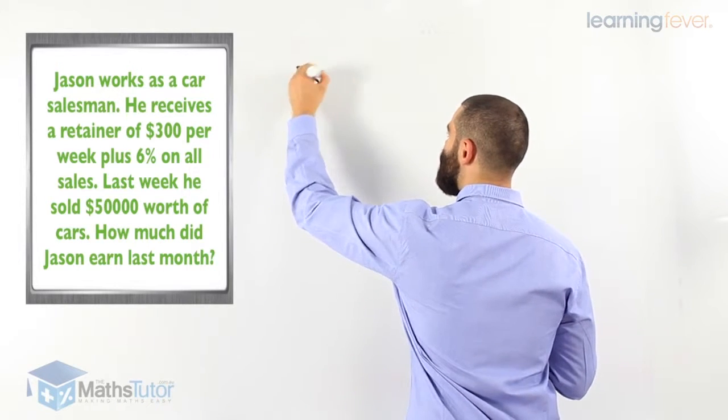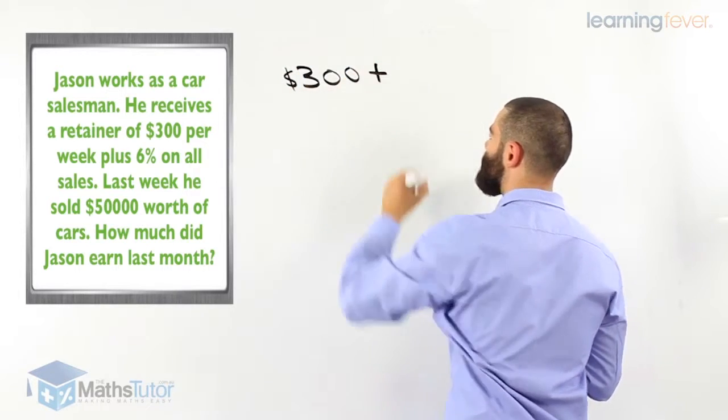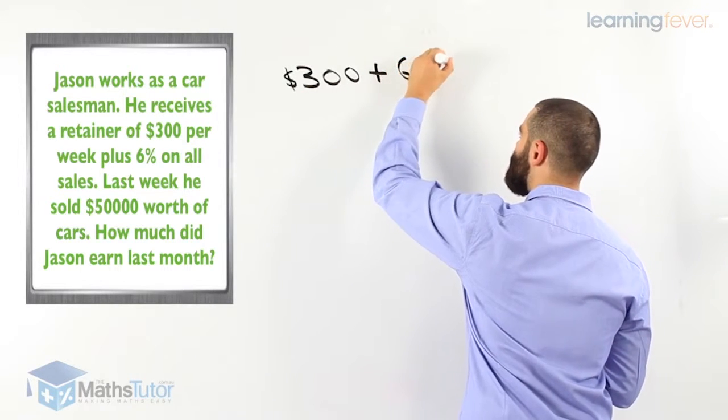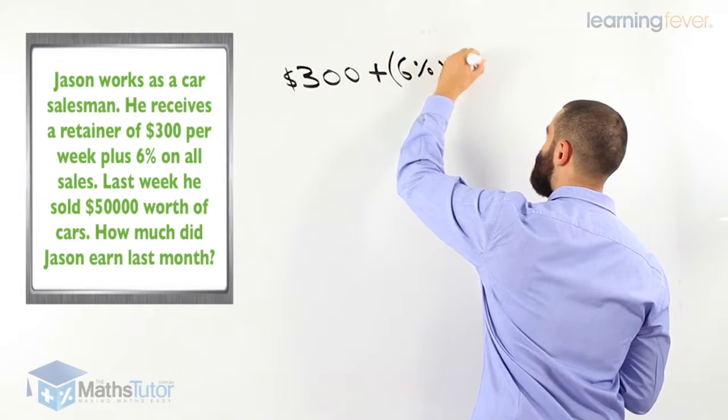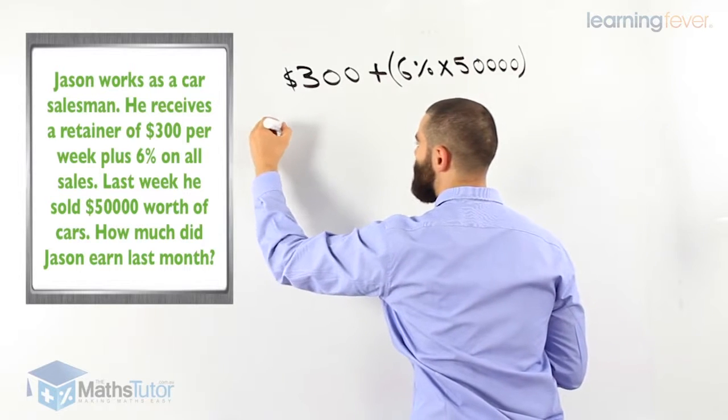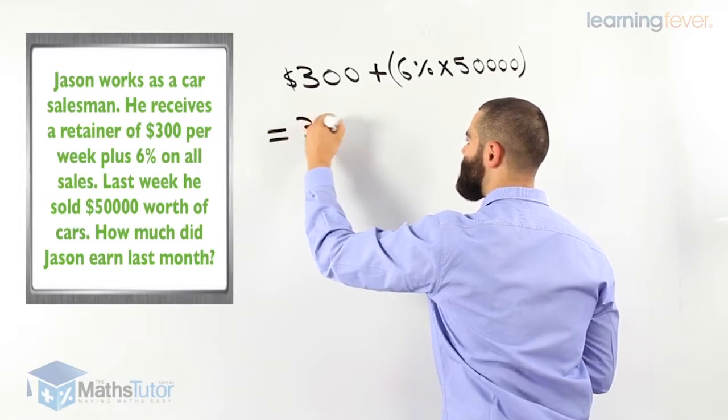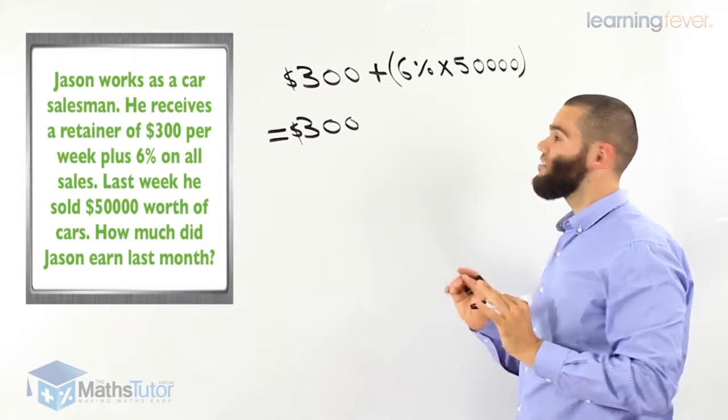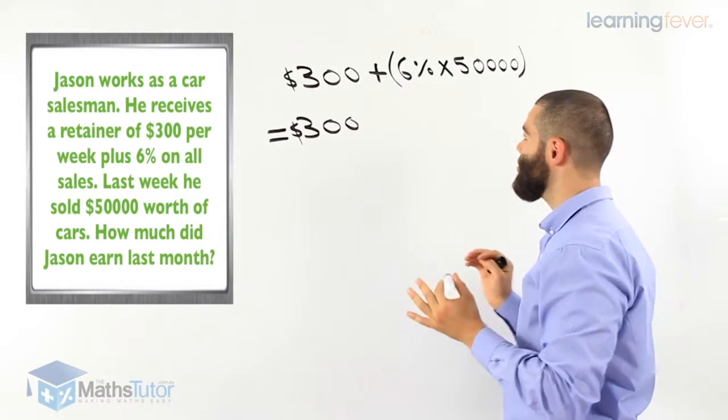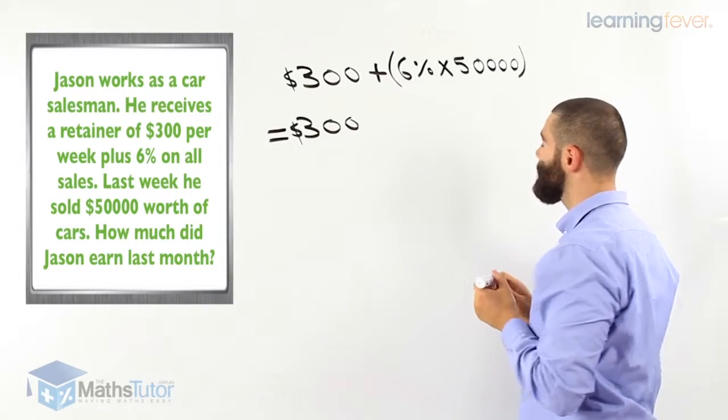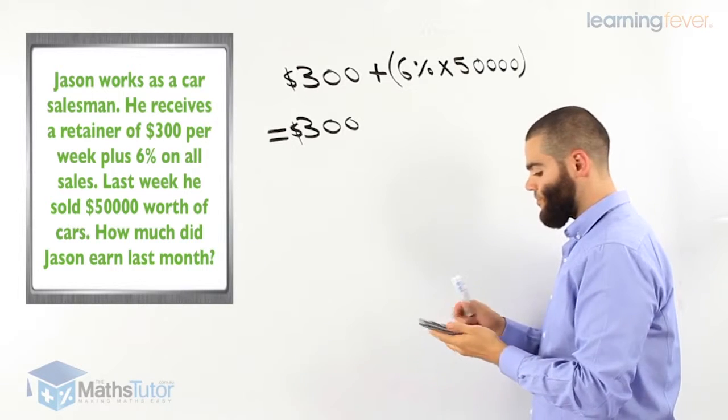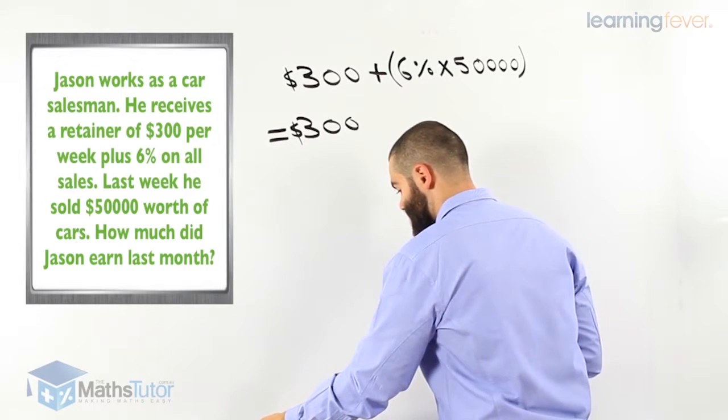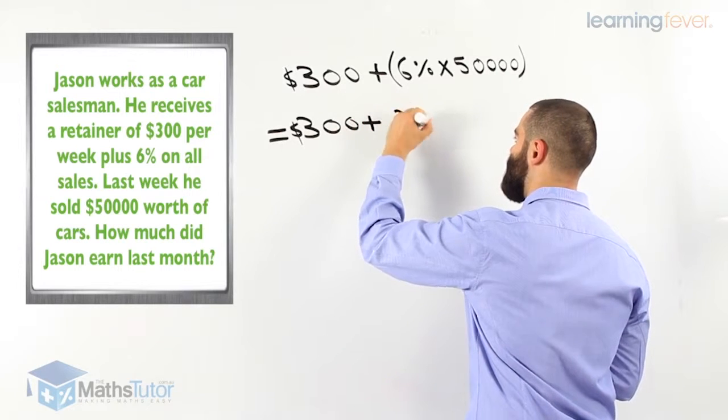His retainer is $300 plus he's going to get commission. He sold $50,000 worth of cars. So he's going to get 6% of the $50,000 worth of cars that he sold. So $300 is a guaranteed wage. A retainer is a guaranteed wage. He's going to get that on a weekly basis. Plus he's going to get a percentage of the sales. So $300 plus 6% of the sales, 6% of $50,000. We grab our calculator. 6% times $50,000 equals $3,000.